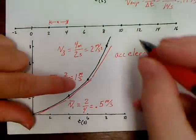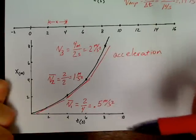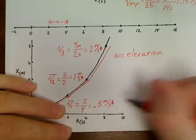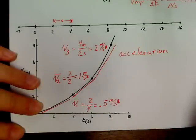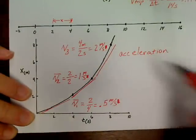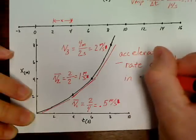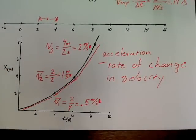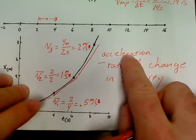Just to clarify — those velocities should all be meters per second, not meters per second squared. Sorry about that. So the velocities are 0.5 meters per second, 1 meter per second, and 2 meters per second. His speed is doubling, and a changing speed means we've got an acceleration. Acceleration is nothing but the rate of change in velocity — that's your definition for acceleration.